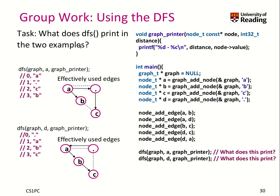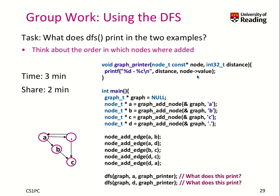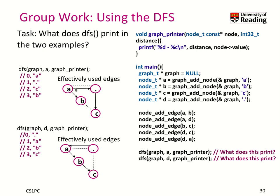Welcome back. So what does DFS print in the two examples? We print the distance and the character — that's the first thing to spot in the graph printer. When we start at node A, DFS could first iterate to dot, then to C. Then it has to backtrack to node A because from C there is no connection to B, and from A we traverse to B. But from B we cannot traverse to C because C already has its marker set to true. When we start from node D, one potential order is: D to A, to B, to C — and now we have visited all nodes and we are done.